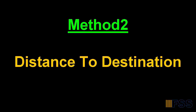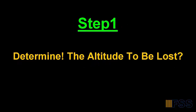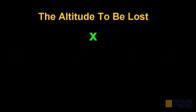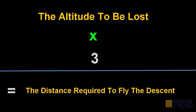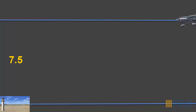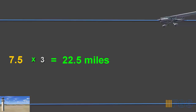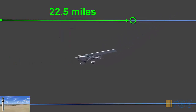Now let's look at the second method, which is based on distance to destination. The first step is to calculate the altitude to be lost exactly as we did before — in this example it's 7,500 feet. The rule is to multiply the altitude to be lost, in thousands, by 3, and the result is the distance required to fly the descent profile to destination. So we multiply 7.5 by 3 and get 22.5 miles — we need to start our descent at least 22.5 miles before reaching our destination.